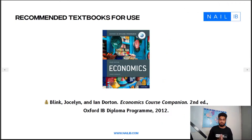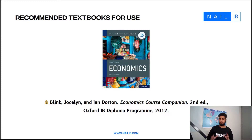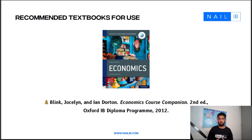First things first, this is one textbook that you should have, and frankly it's one that IB implores you to have as well. It's Jocelyn Blinks and Ian Dorton's Economics Course Companion, second edition for the Oxford IB Diploma Program, published in 2020. What you need to be using in tandem with this course is this textbook. However, if you don't have it please don't worry, as this course is more than sufficient for a solid understanding of IB economics.